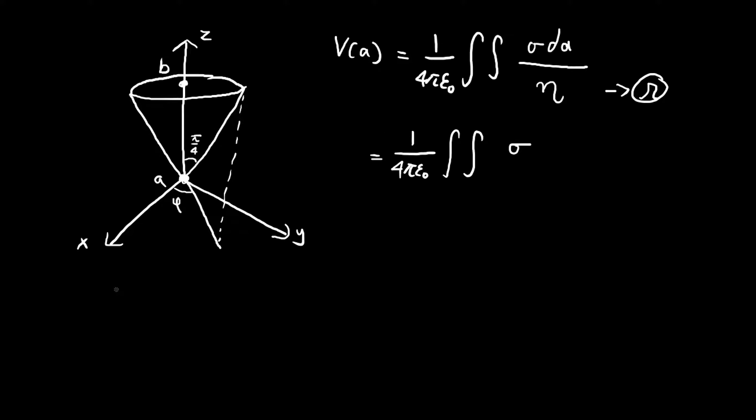The angle between the radial component and the z-axis, which we usually denote with theta, is locked in at pi over 4. It equals pi over 4 because we're told that the height and radius are the same.